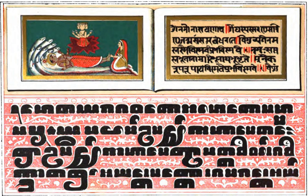The word Pali is used as a name for the language of the Theravada Canon. According to the Pali Text Society's Dictionary, the word seems to have its origins in commentarial traditions, wherein the Pali in the sense of the line of original text quoted was distinguished from the commentary or vernacular translation that followed it in the manuscript.